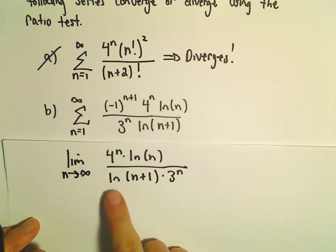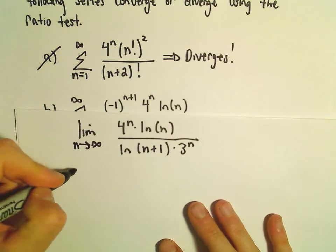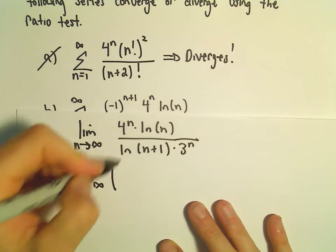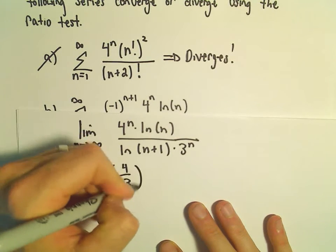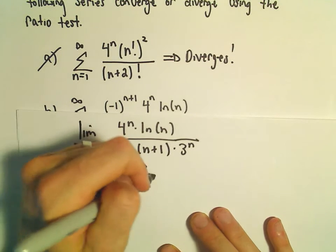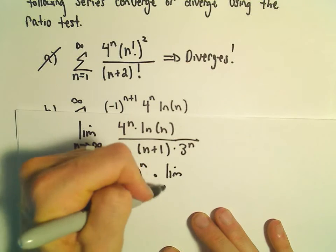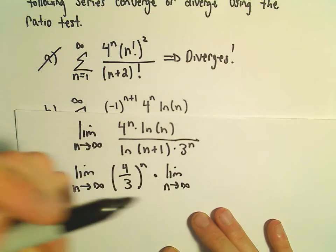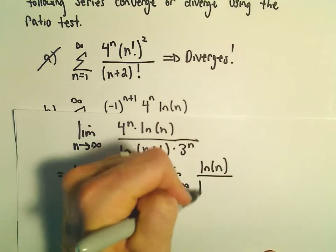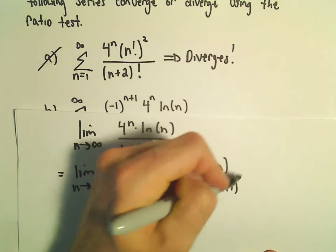So the idea for this part, we can write this as the limit as n goes to infinity. This would be 4 thirds. I can write the 4 to the n over 3 to the n as 4 over 3 to the n. And then we can multiply that by the limit as n goes to infinity of the natural logarithm of n over the natural logarithm of n plus 1.